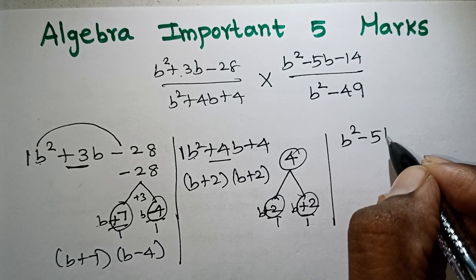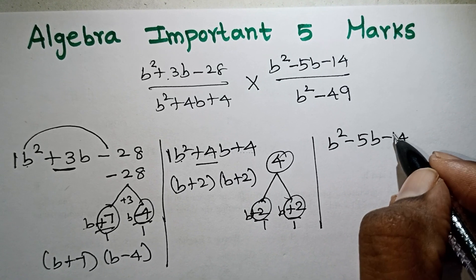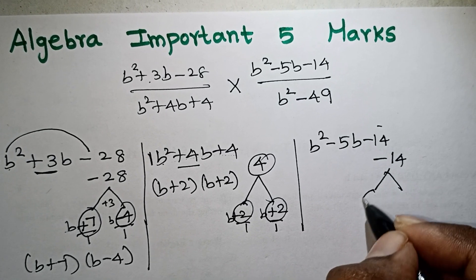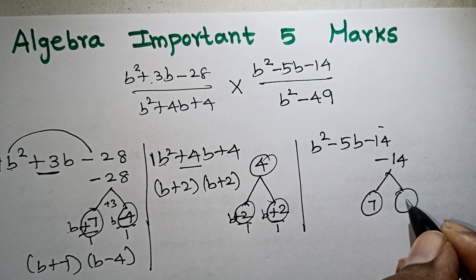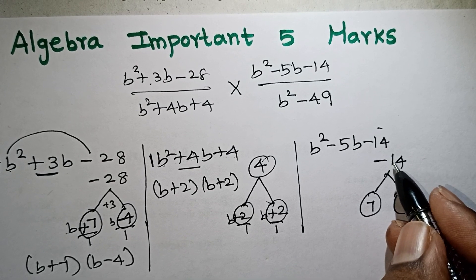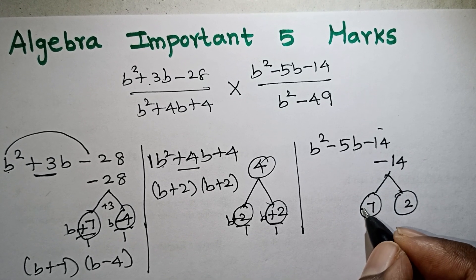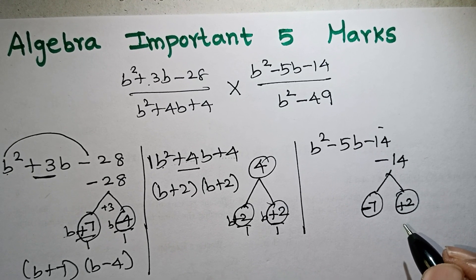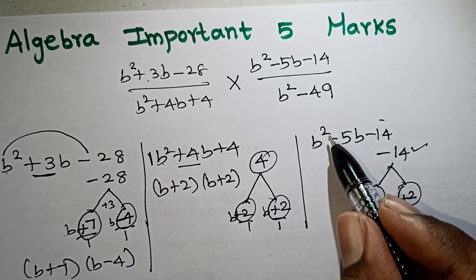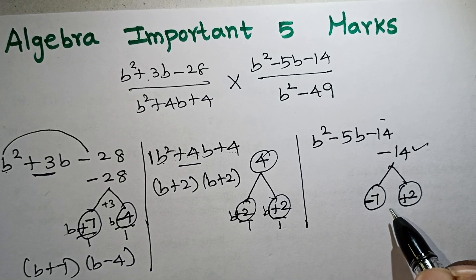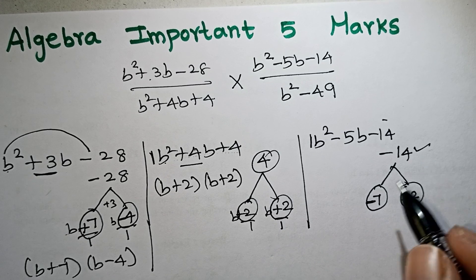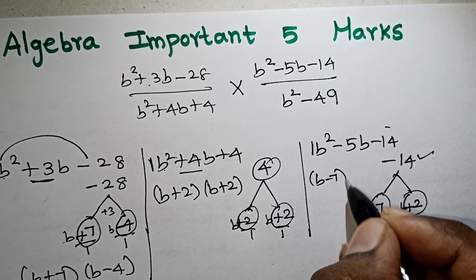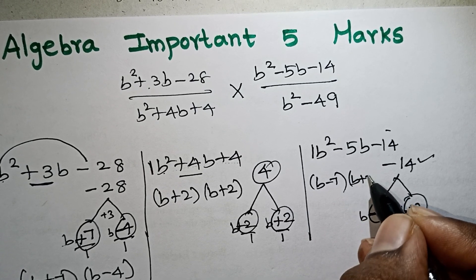Next, b squared minus 5b minus 14. If you multiply minus 14 and subtract to get minus 5, you get 7 and 2. Minus 7 and plus 2 multiply to give minus 14 and add to give minus 5. So the factors are b minus 7 and b plus 2.